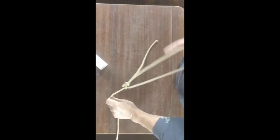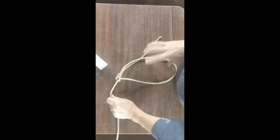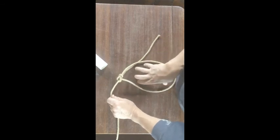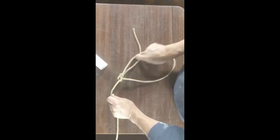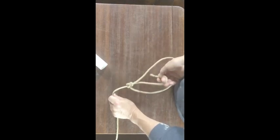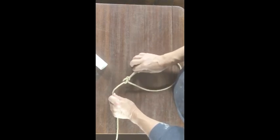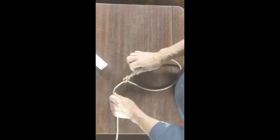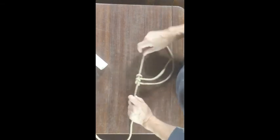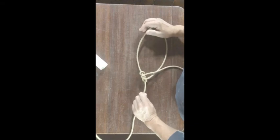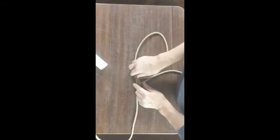You then have the loop of the bowline around your buddy, so buddy's body would be in there. If you think it's not secure, simply just put a round turn on that rope. That just helps lock it off. Bowline, tied one-handed.